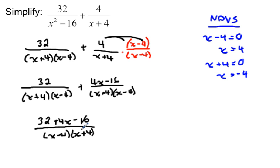So now I'd like to see if I can further simplify this expression. I've got 32 plus 4x minus 16, so I've got like terms when I look at the 32 and the 16, so I'm going to subtract those now. That would give me 16 plus 4x over x minus 4 and x plus 4.